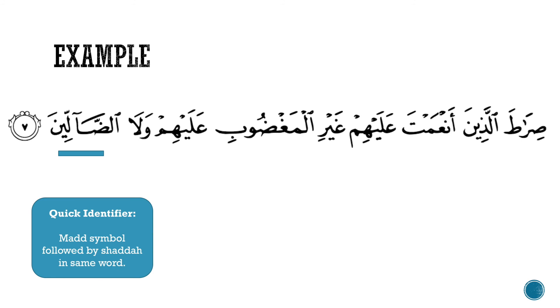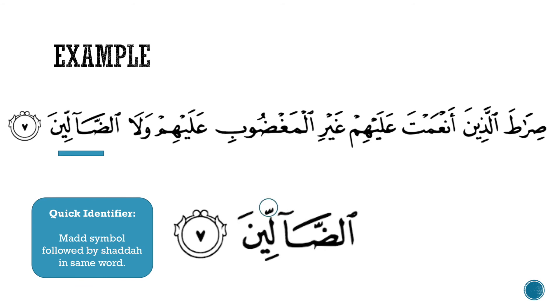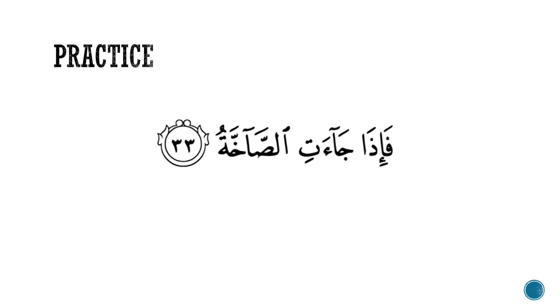وَلَا الضَّالِّين. We can see here the word الضَّالِّين — there is a مَدْ symbol followed by a شَدَّة in the same word, hence مَدْ لَازِمْ كَلَمِي مُثَقَّل. Let's practice a bit more: فَإِذَا جَاءَتِ الصَّاخَّة. Again we can see from the word الصَّاخَّة — there is an alif مَدَّة followed by a شَدَّة in the same word, so we will stretch for six counts.